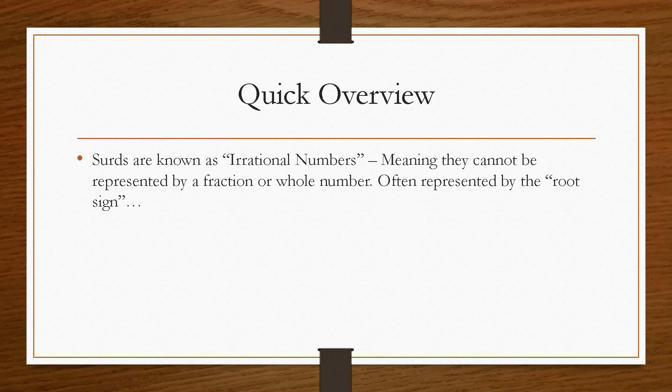So if we take a quick overview, a surd is a rational number, meaning that it cannot be represented by a fraction or a whole number, and is usually represented in the form of a square root sign.